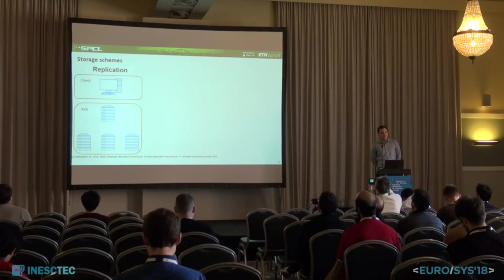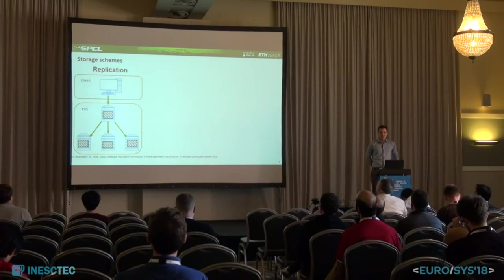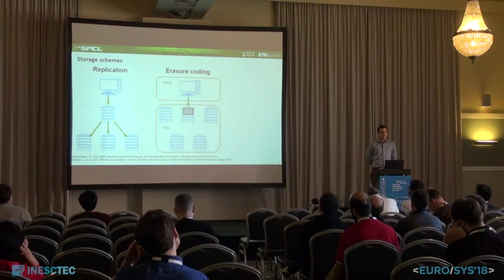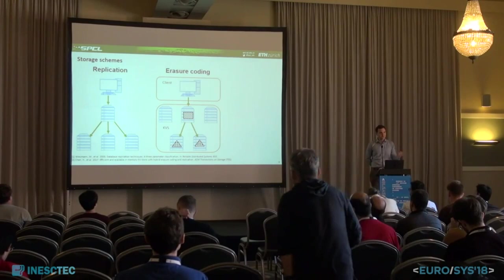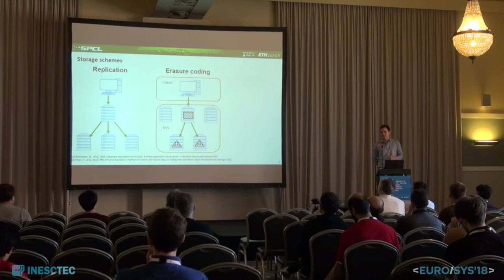The most popular scheme is replication, where the client sends its data to a key-value store where multiple copies are made. In erasure codes, no additional copies are made, and the key-value store generates special parity updates which are propagated to the parity nodes. In this work, we focus on Reed-Solomon codes, which you're probably familiar with from RAID 5 and RAID 6 storage systems.